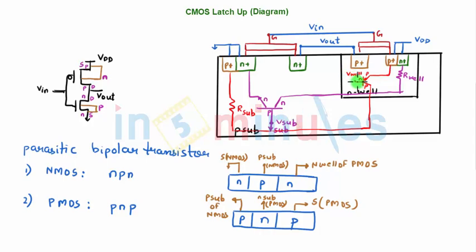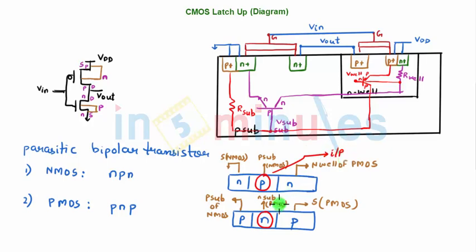V-well is in the N-type region, and N is connected through R-well. The voltage V-well exists after which resistance develops between N-plus and N-well. Similarly, V-sub exists after which there is a resistance between the substrate and its tap. With this we have understood the NPN and PNP transistors and where their terminals connect. Now let's translate this diagram into something easier to understand.